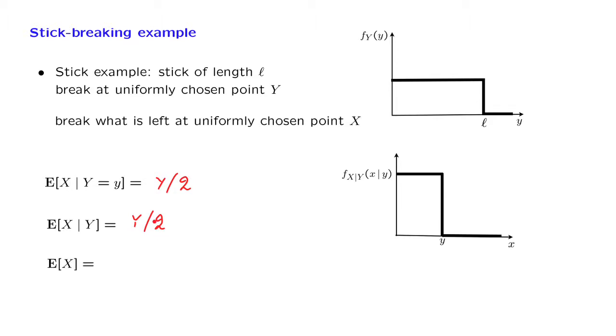And now we can proceed and calculate the expected value of X using the law of iterated expectations. The law of iterated expectations takes this form. We have already calculated what this random variable is. It is the random variable that's equal to Y over 2.